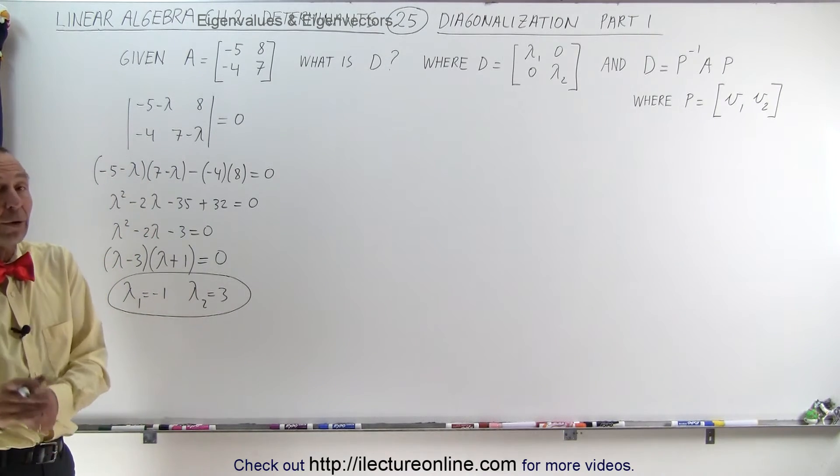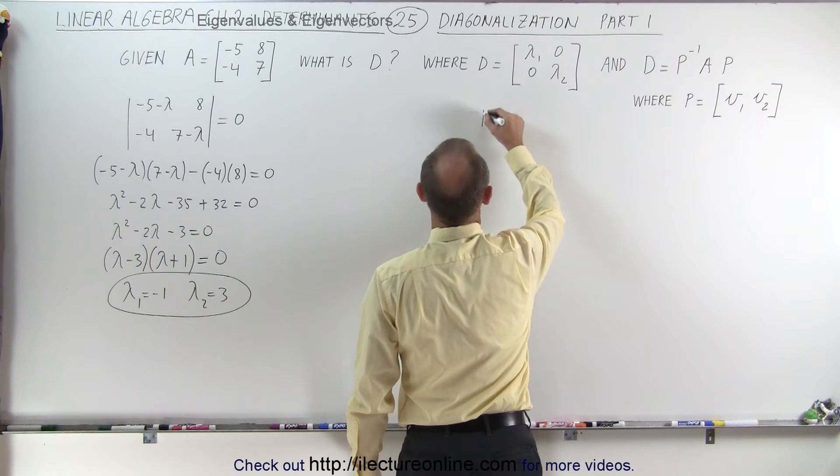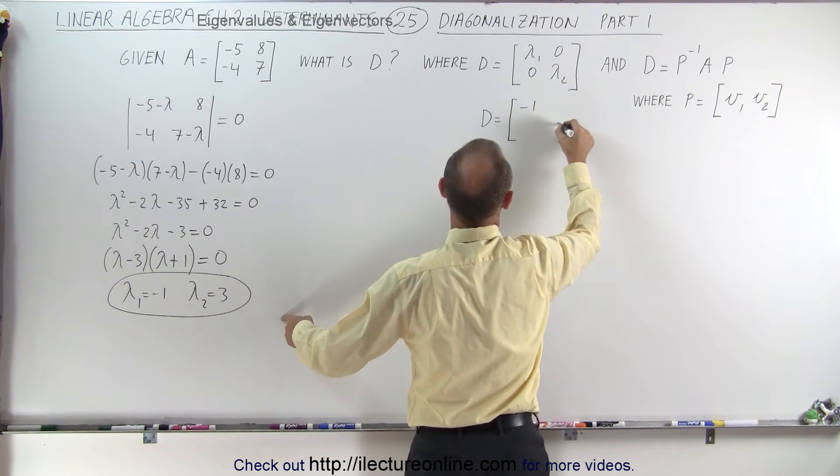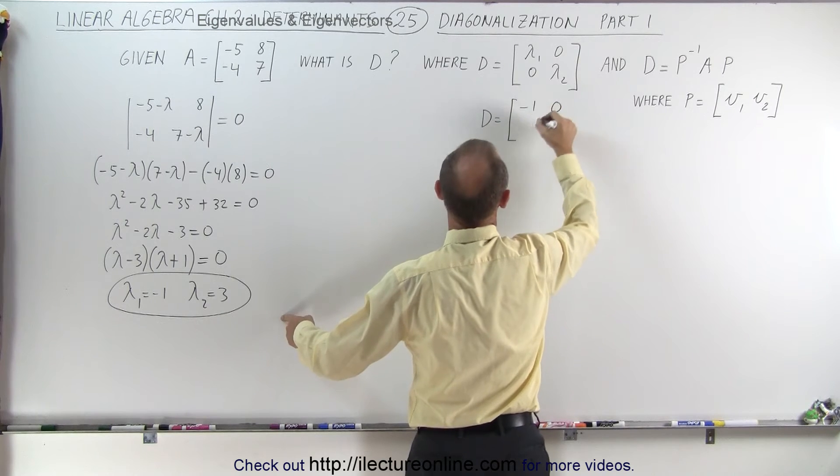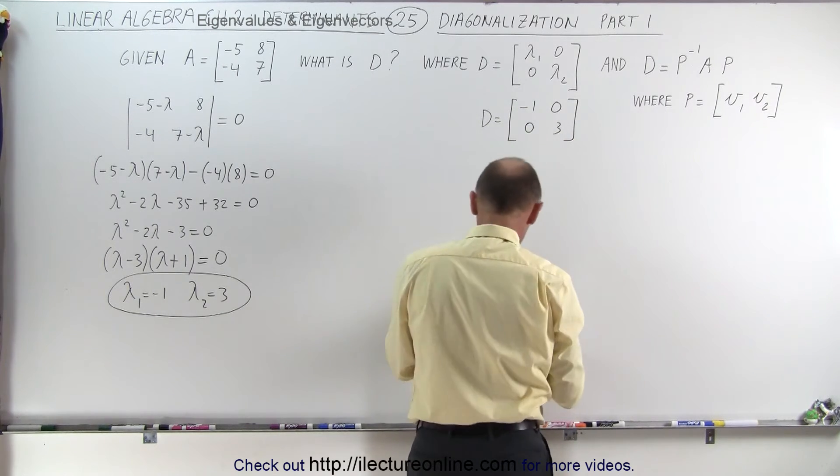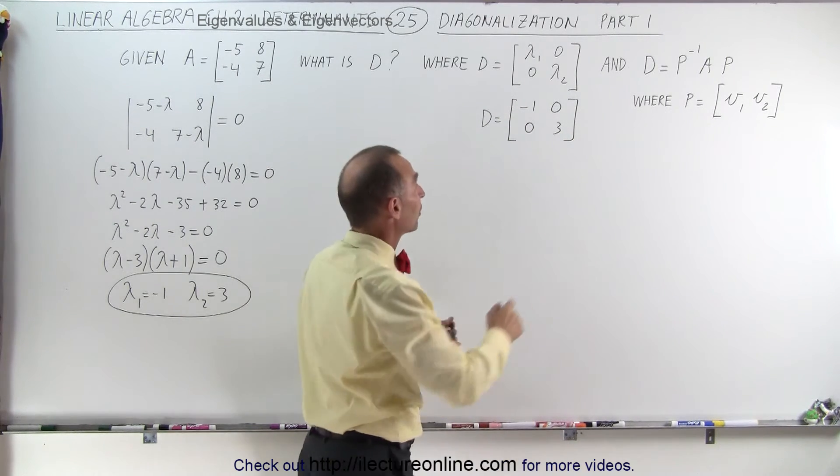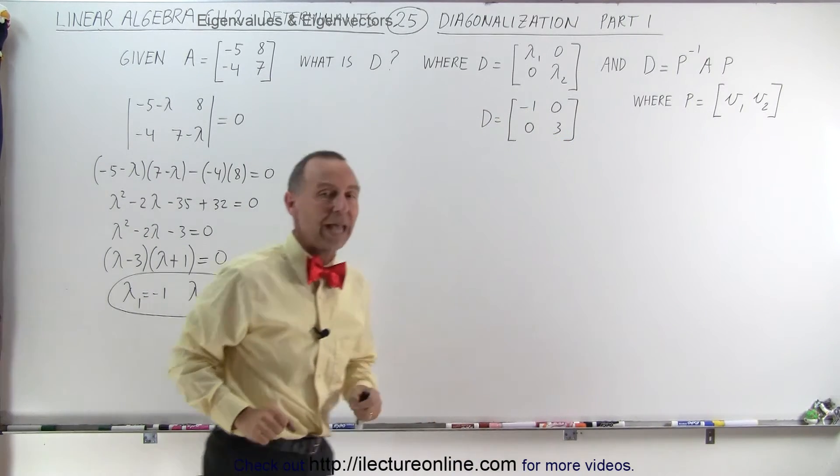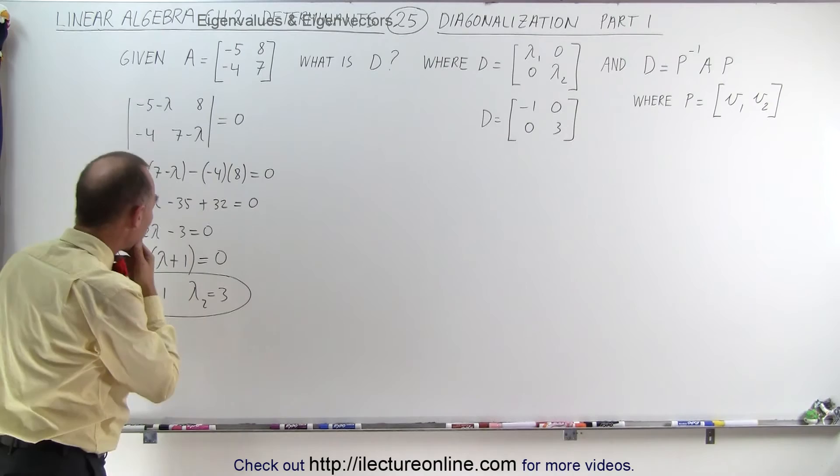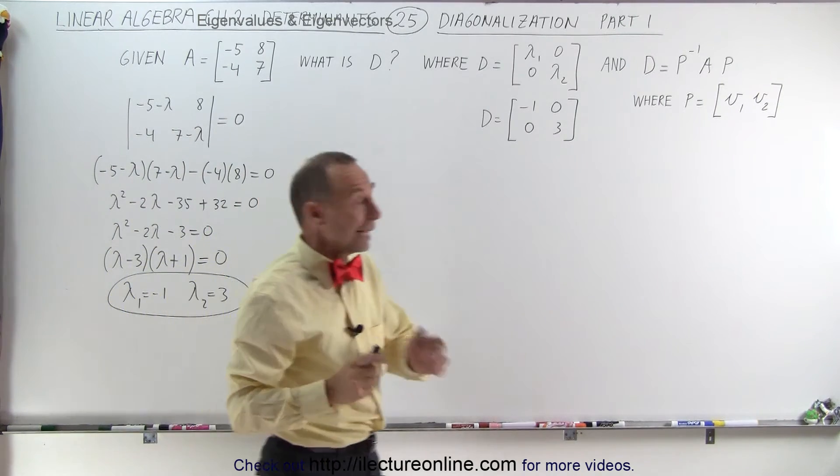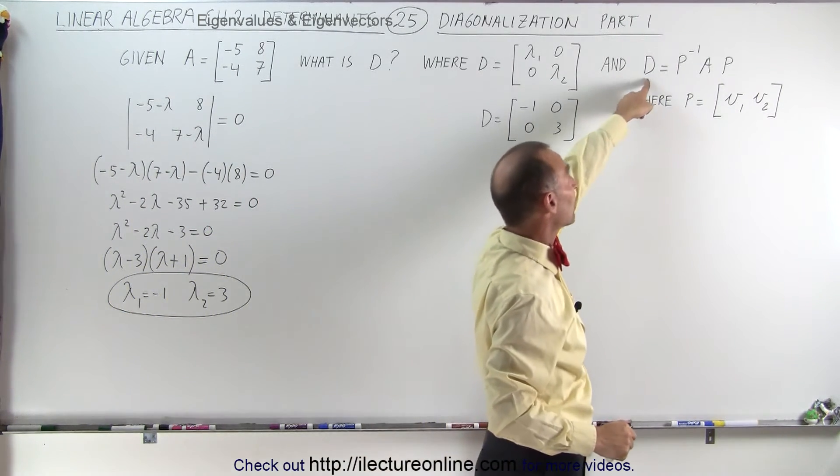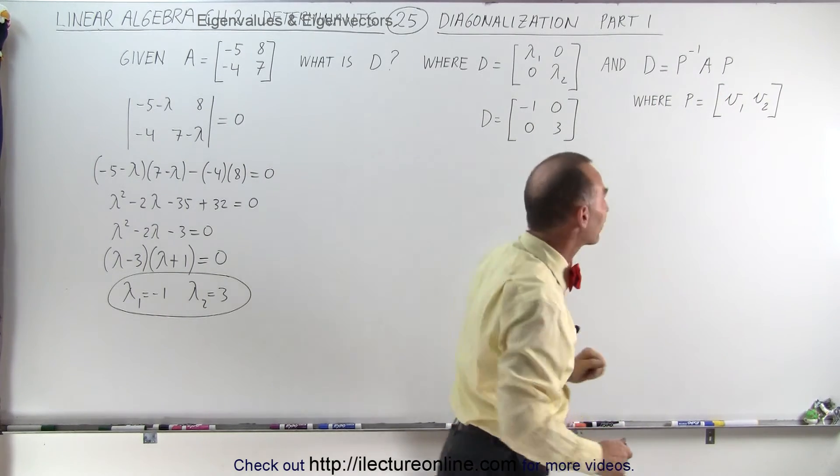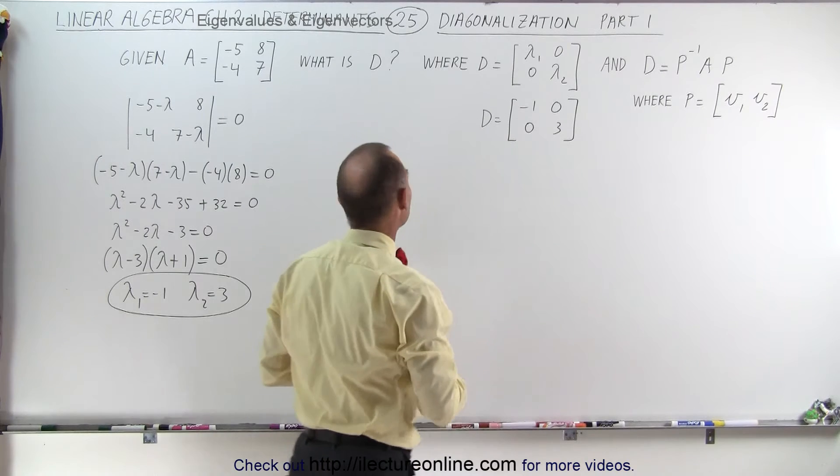That means that our diagonalized matrix will look as follows. D is equal to, we have minus 1 and 3 along the diagonal and 0, 0 everywhere else. And you may wonder, would it matter if I put the 3 up there and the minus 1 down here? That would make no difference at all. So what we're going to continue doing now is, because we're also going to later want to find out the diagonalized matrix using this methodology here, we're going to need to find our eigenvectors corresponding to those two eigenvalues.